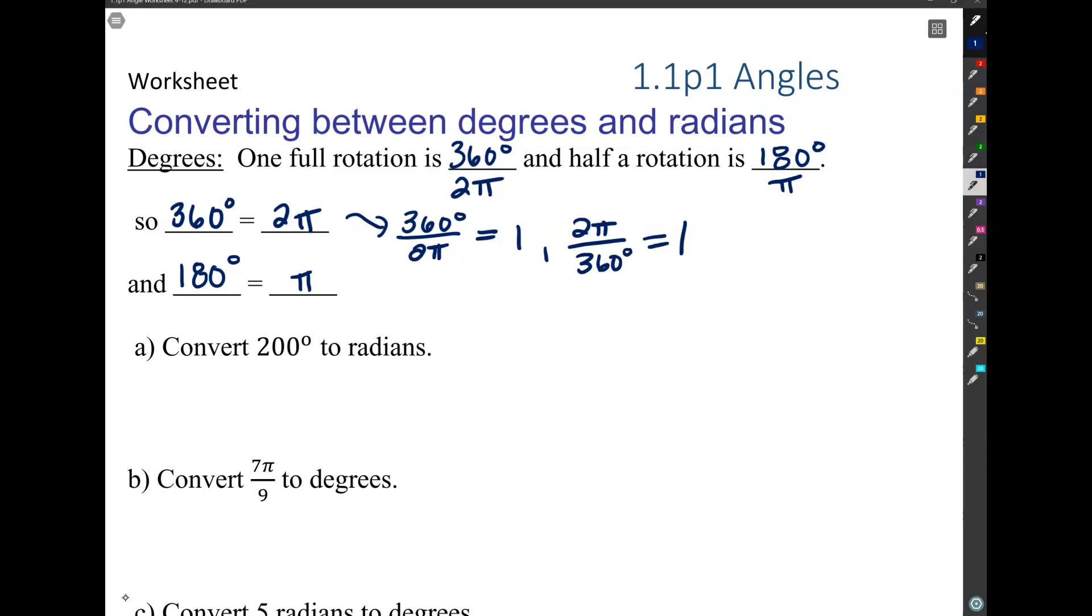And the thing that's important about that is we can always multiply something by one without changing its value. So we use this all the time, change the appearance of numbers, change the units attached to numbers by multiplying by one written in a tricky way.